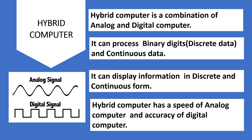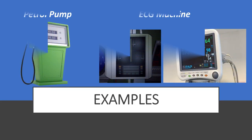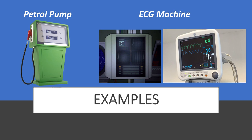A hybrid computer has the speed of an analog computer and the accuracy of a digital computer. Examples of hybrid computers are: petrol pump and ECG machine.